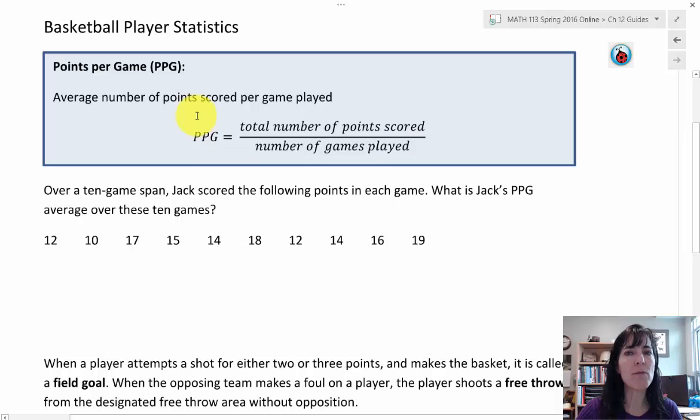It's an average of how many points a person scored in each game. You might have one game where the person scored two points, you might have a game where they scored zero points,